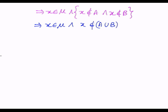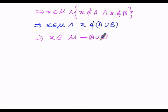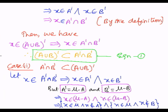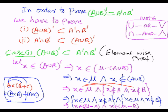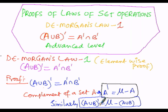This implies x is present in μ but x is not present in A ∪ B — that is, A ∪ B is subtracted from μ. So we can write x belongs to μ minus (A ∪ B). We know from the formula that (A ∪ B)' equals μ minus (A ∪ B), so instead of μ minus (A ∪ B) we write x belongs to (A ∪ B)'.